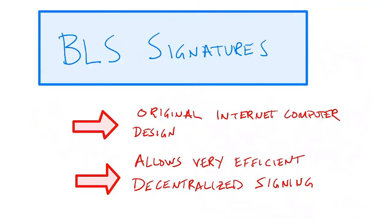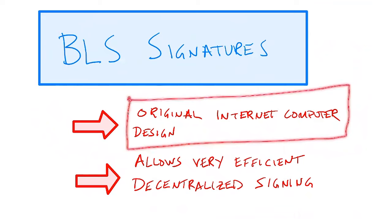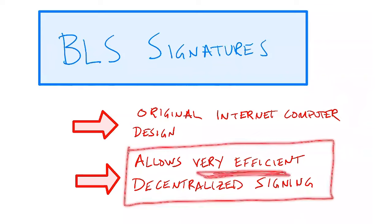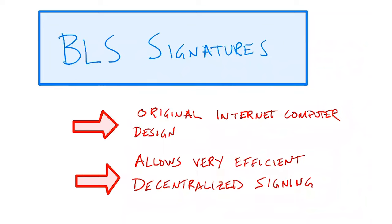There are a couple of different ways you might implement decentralized signatures, and these are usually built on top of traditional centralized signature schemes. One such scheme is called the BLS signature scheme, and this is actually the scheme used in the original Internet Computer design. The reason it was used is that it allows for very efficient decentralized signing. Moreover, because the Internet Computer was a brand new thing and didn't have to rely on legacy technology, we were free to adopt BLS signatures without worrying about being backward compatible with other standards and signature schemes. So that was very compelling and made a lot of sense at the time.